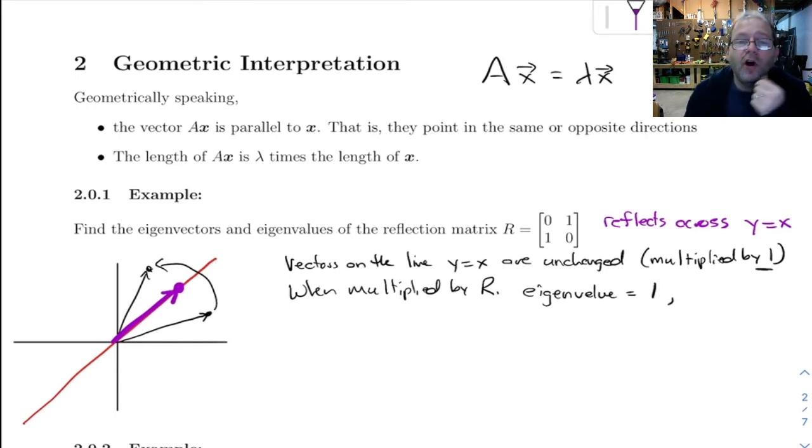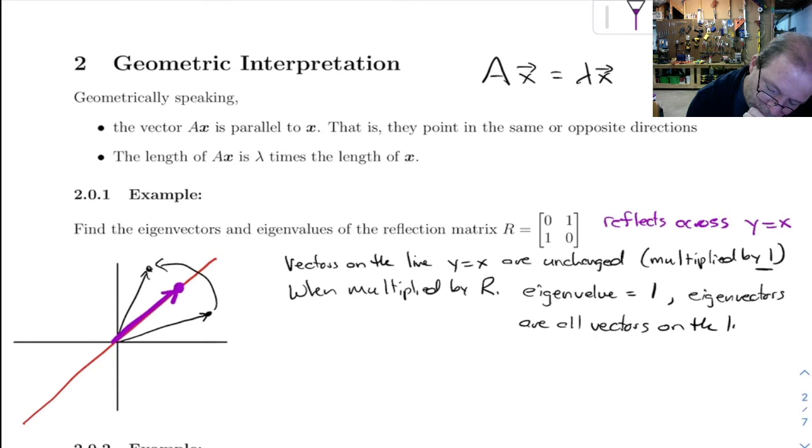The eigenvectors are all the vectors that lie on that line. Another way we could say that is the span of [1, 1].